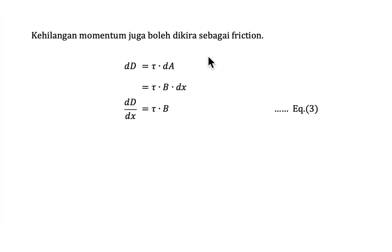So another idea about the deficit of momentum is it is because of the friction. So as we know previously, force is equal to tau A. And then we could say that deficit momentum is actually shear stress times dA, which is A here is the dx, the length of flat plate in x axis times width B. Then we could simplify this term into dd over dx equal to tau B. And we state this expression as equation 3.